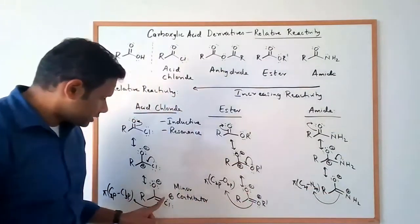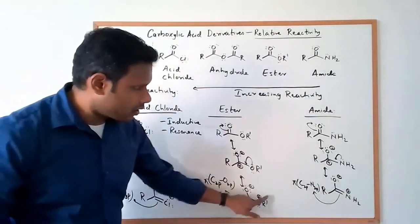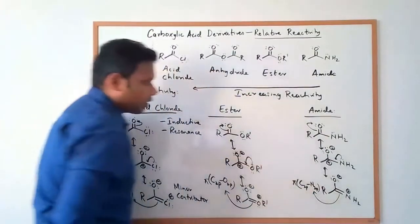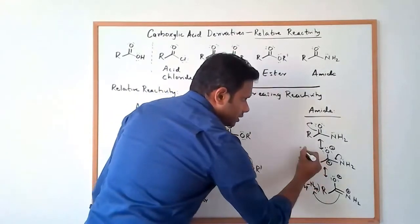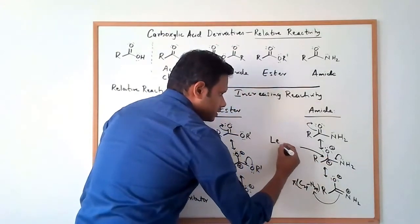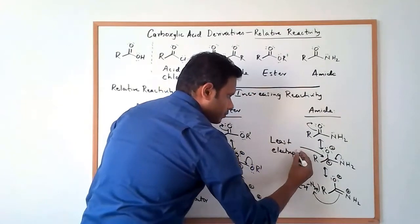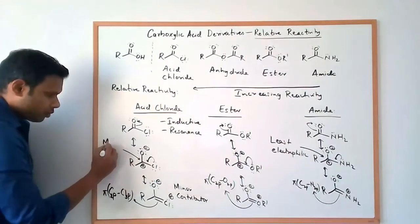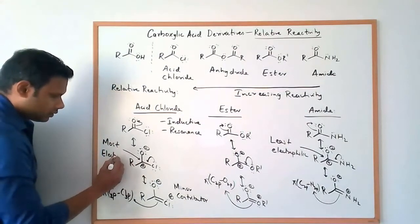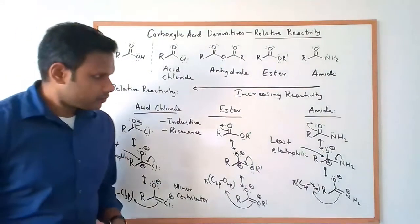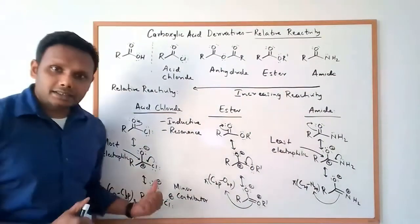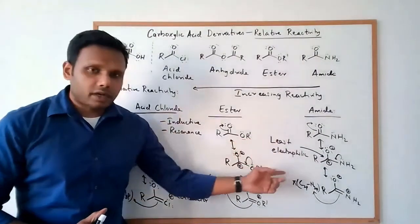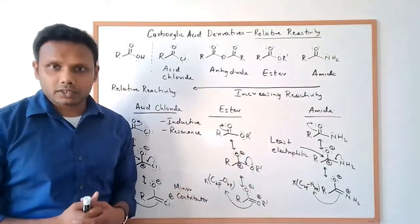This means this resonance form becomes a better contributor to the overall resonance of the molecule — more than the ester case, and much better than the acid chloride case. What we see is that the contribution of this third resonance form increases going from acid chloride to ester to amide. And what this third resonance form does is it takes away the positive charge from the acyl carbon — it removes the electrophilicity from the acyl carbon. So because of that, the acyl carbon in the amide is the least electrophilic, whereas the acyl carbon in the acid chloride is the most electrophilic.